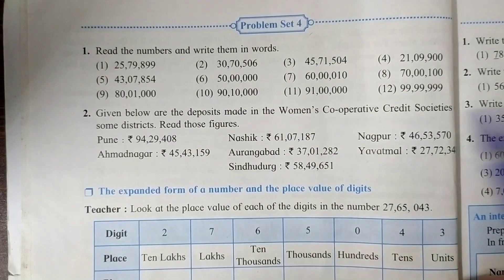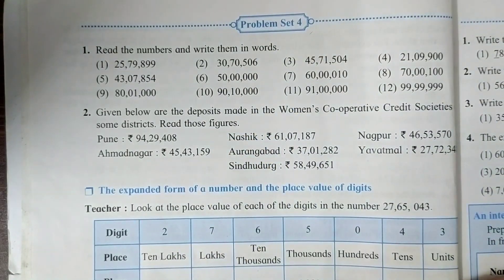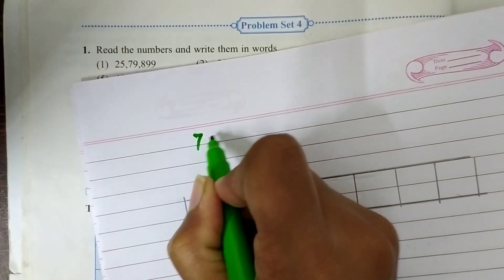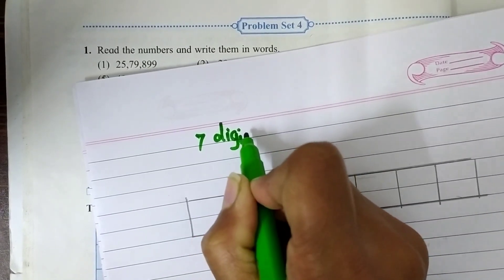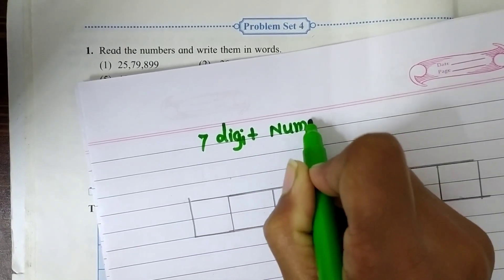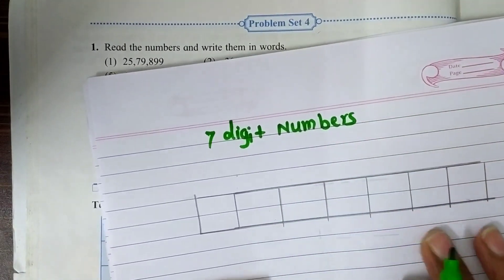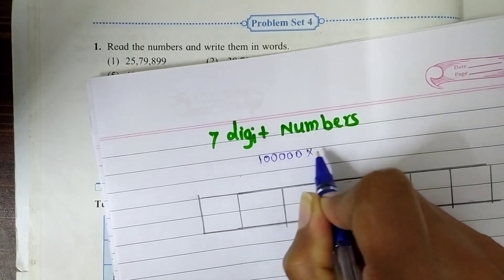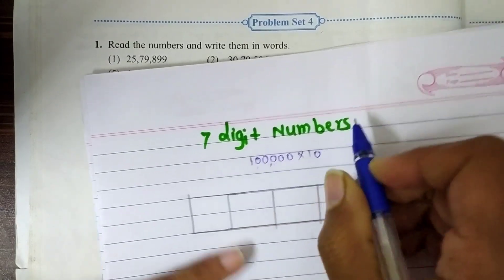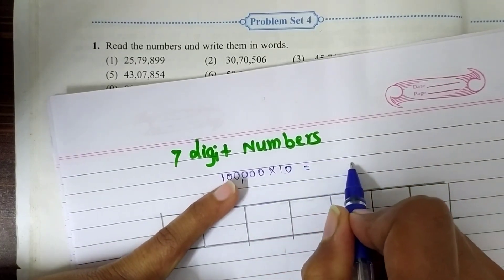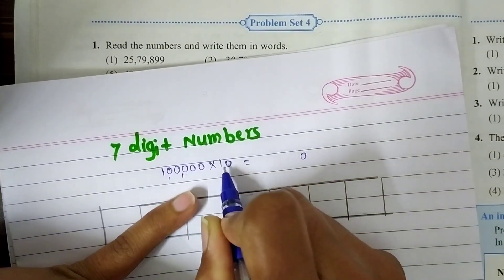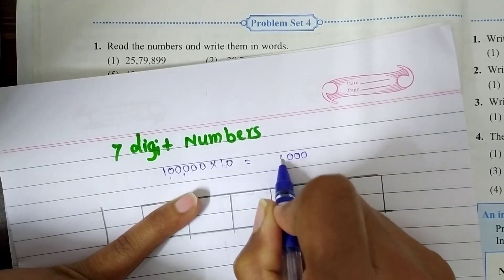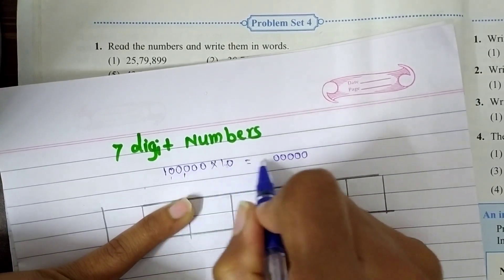So before we solve Problem Set 4, we shall learn about 7-digit numbers. When we multiply 1 lakh by 10, we get a new number. Multiplying gives us 10 ones are 10.